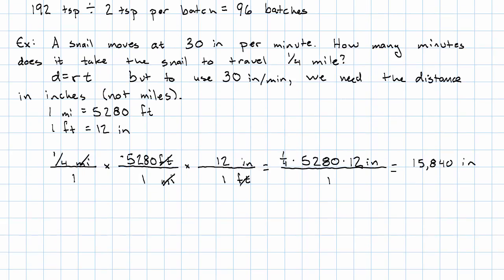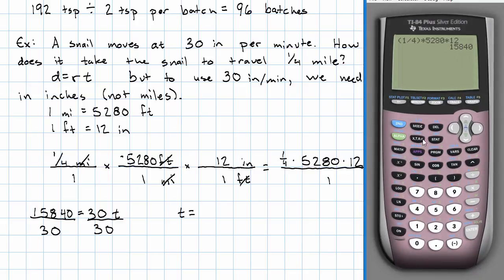Okay. We're expecting our answer to be a really big number, right? Our 15,840 equals the rate, 30 times the time. Well, we know to divide both sides by 30. And we'll get that the time is, let's see, this number divided by 30 is 528 minutes. And that's it. We're done. It takes 528 minutes.